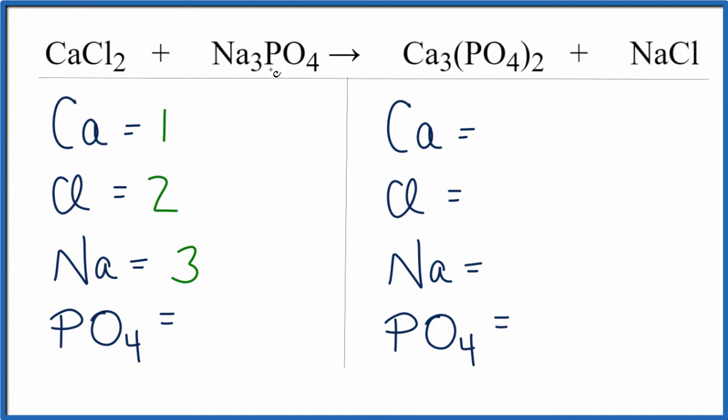And then rather than separate the phosphorus and the oxygens, I've kept them together because this is an ion, the phosphate ion. So I'm going to keep those together because I have one here and then I have PO₄ on the other side.